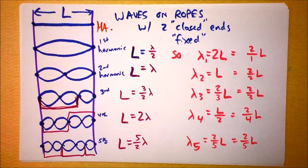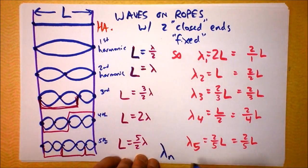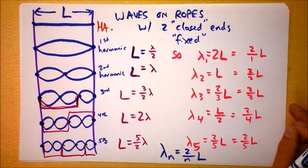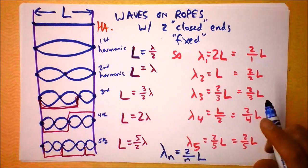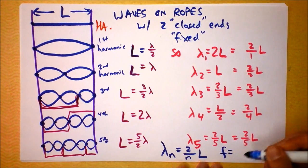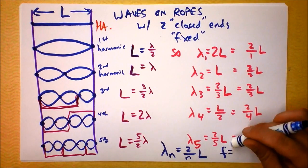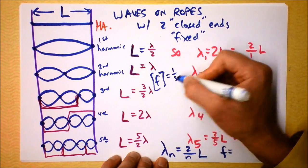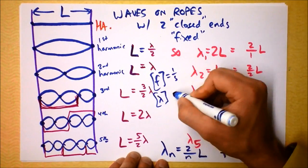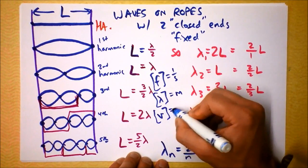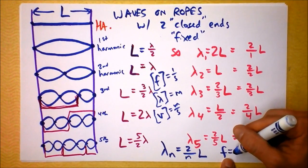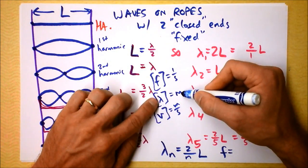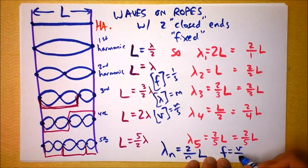So we can generally say the nth wavelength for the nth harmonic is two divided by n times L: λₙ = 2L/n. Now, what if we're asked about frequency? Frequency has units of one over seconds, wavelength has units of meters, and speed has units of meters per second. So frequency must equal V divided by lambda — taking V and dividing by lambda gives meters per second divided by meters, leaving one over seconds.